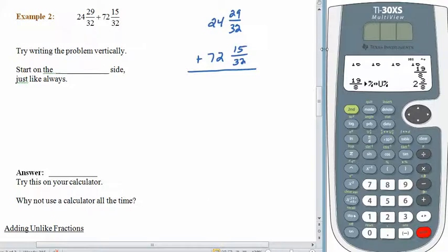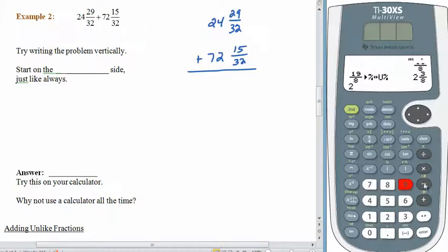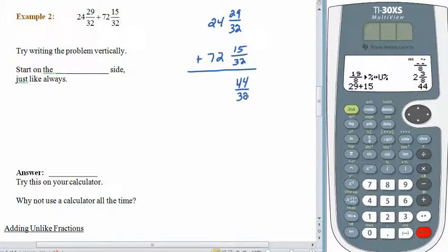Whenever you're working an ordinary addition or subtraction problem, you always start on the right-hand side. And this is going to be no different. We have 29 32nds plus 15 32nds. We can add those directly because we've got that common denominator of 32. 29 plus 15, let's see what we have here. This is why we use our calculators and our brains together, because sometimes we put the wrong thing in. That will give us 44 32nds.